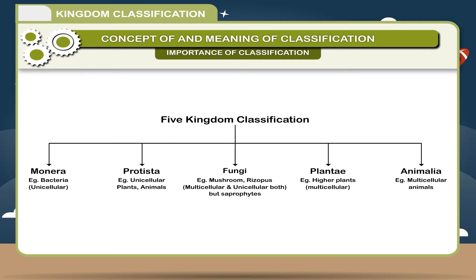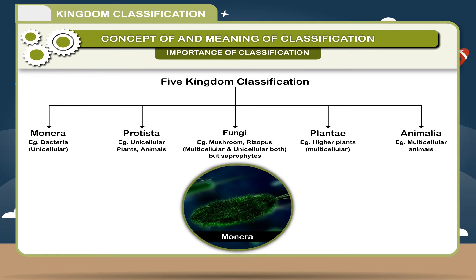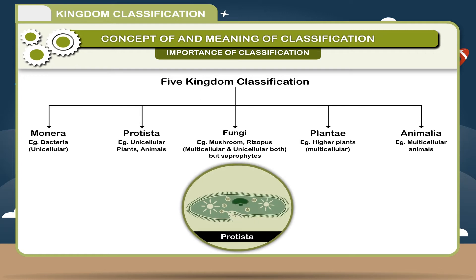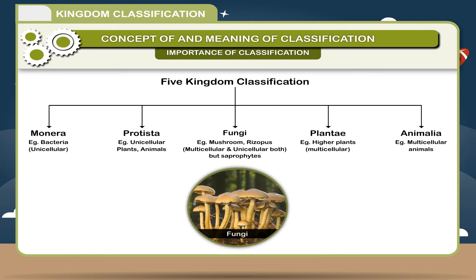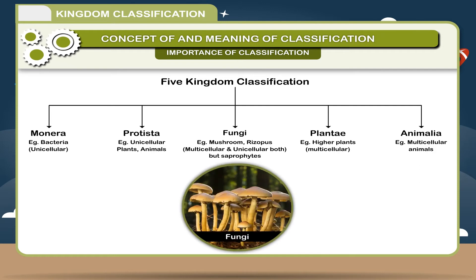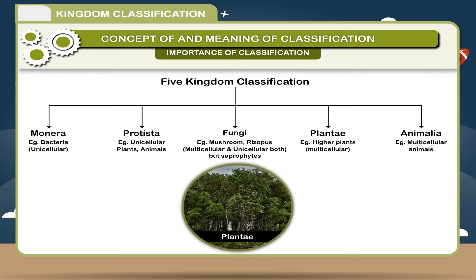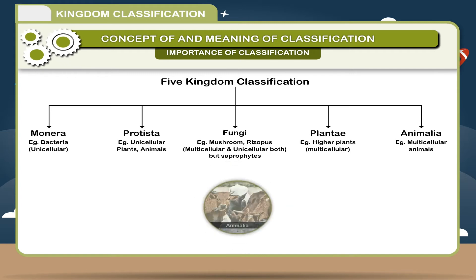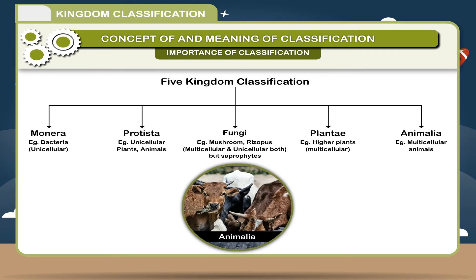Five Kingdom Classification overview: Kingdom Monera and Kingdom Protista include unicellular organisms. Kingdom Fungi includes organisms such as mushrooms and Rhizopus, which can be multicellular or unicellular and are saprophytes. Kingdom Plantae includes higher plants that are multicellular. Kingdom Animalia includes multicellular animals.